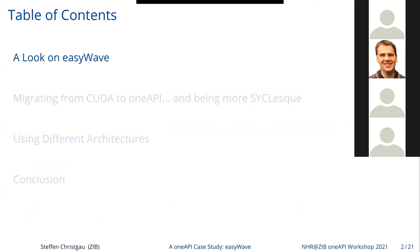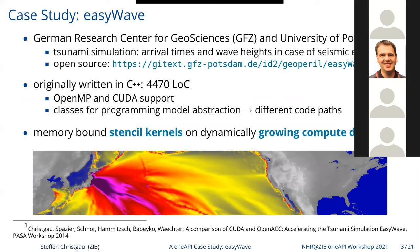Now a closer look at the application. It's named EasyWave — not developed by us, but we made a lot of experience using it in the context of OneAPI. Originally it was developed by the German Research Center for Geosciences, and in collaboration with the University of Potsdam it was brought to CUDA GPUs. The application computes the propagation of a tsunami wave in case of a seismic event — an earthquake inside an ocean. In an early warning center responsible for detecting hazards to the public, EasyWave is used to estimate whether a tsunami is a real hazard.